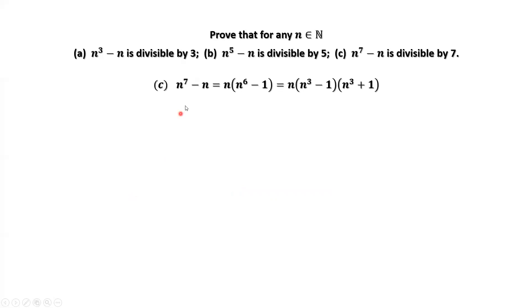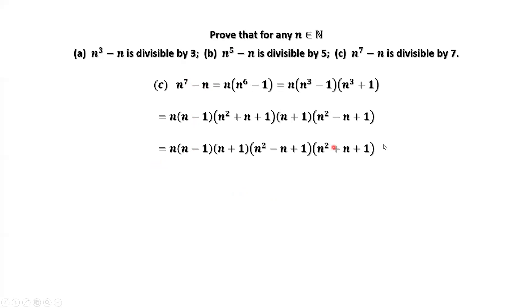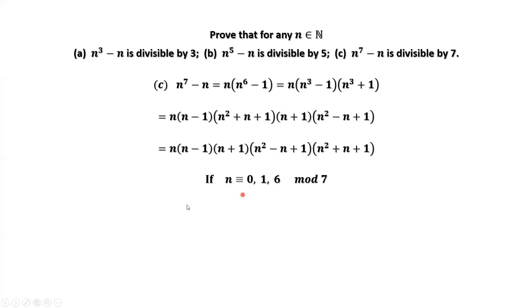For the last result, N to the power of 7 minus N, by factoring and simplification we obtain a factored form. It is a similar idea. We consider the remainder of N divided by 7. All possible remainders are 0, 1, 2, 3, 4, 5, and 6. Let's consider remainders 0, 1, and 6 first; later we consider the other possible remainders.